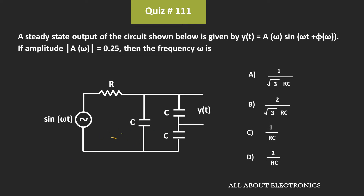In this question, we have been given this circuit. For the given circuit, the output across this capacitor — that is Y — can be given by this expression. Here, we have been given that the amplitude of A(ω) is equal to 0.25. For the given circuit, we have been asked to find the frequency ω for the sinusoidal signal.